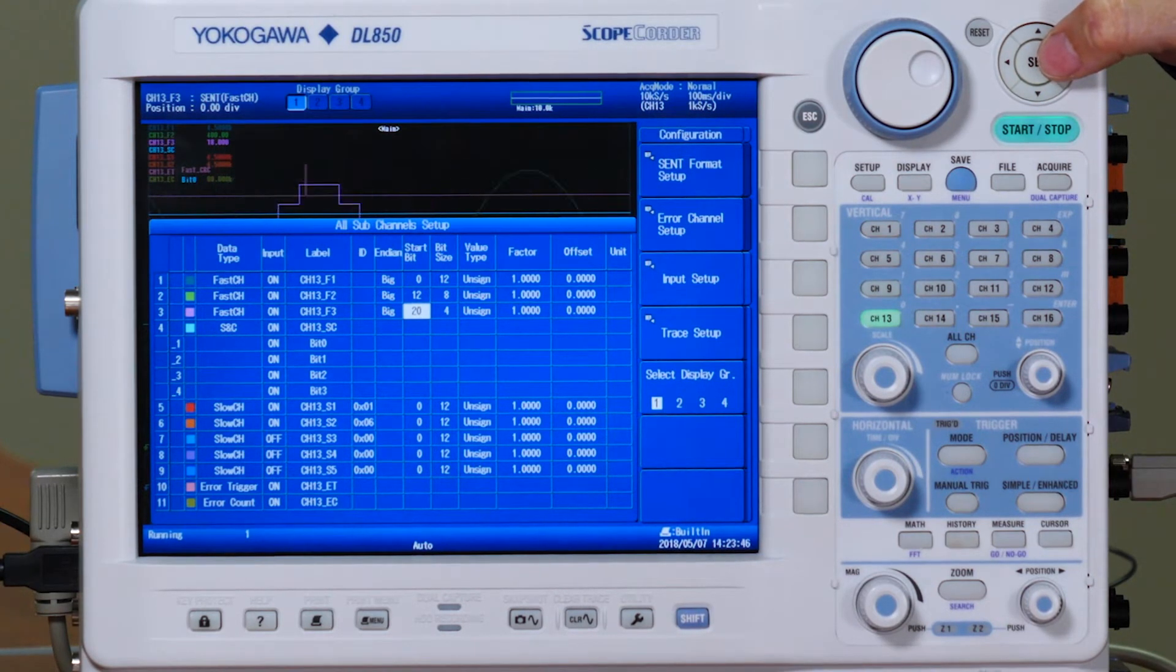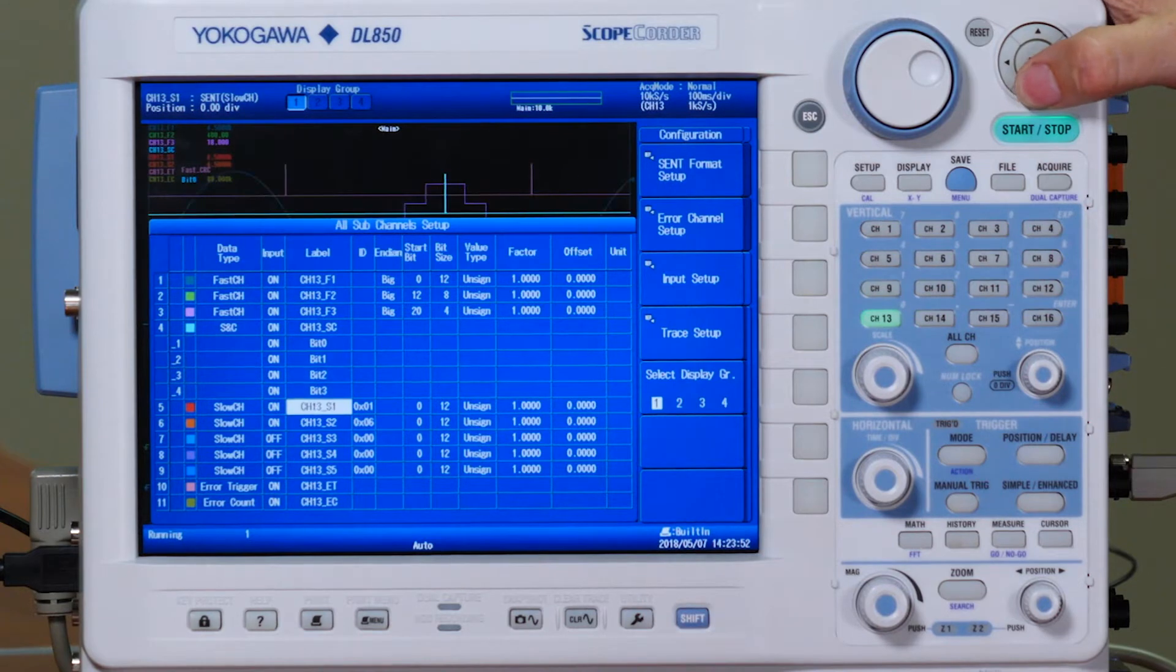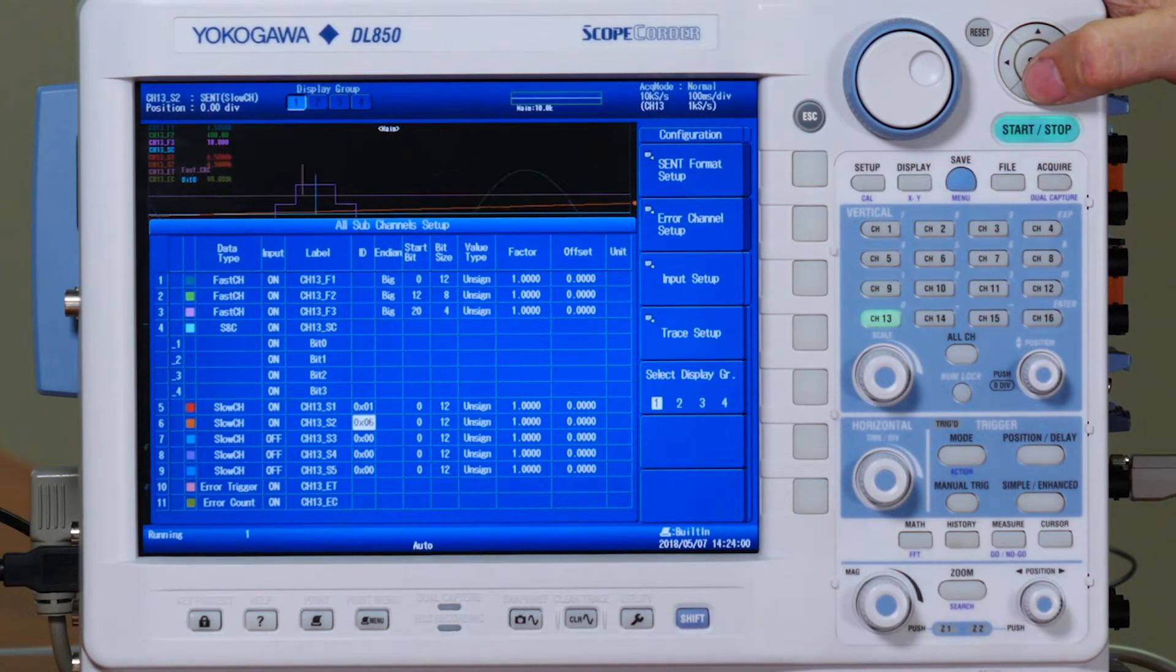Our demo board also outputs a slow channel sawtooth wave using bits 1 and 6, so we will adjust two of our slow channel IDs to display these waveforms. The Yokogawa scope recorder is going to parse out the bits belonging to each channel, put them together into their individual signals, making it easy for engineers to read exactly what values are being communicated.